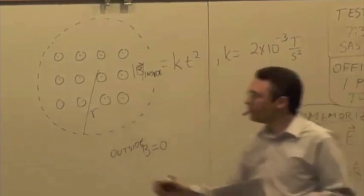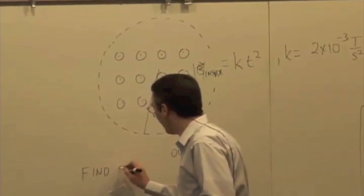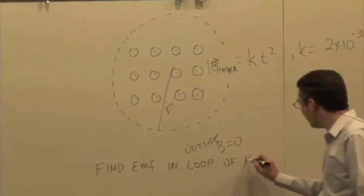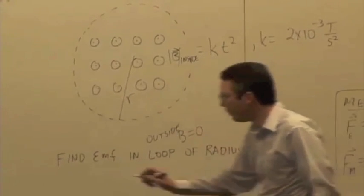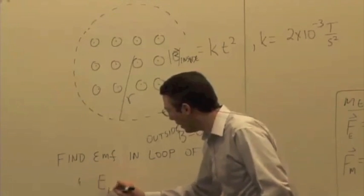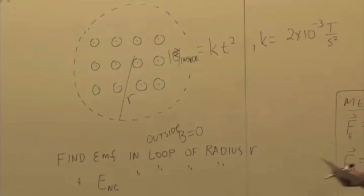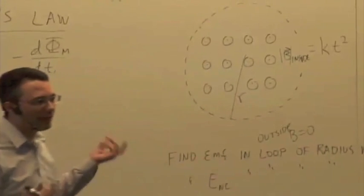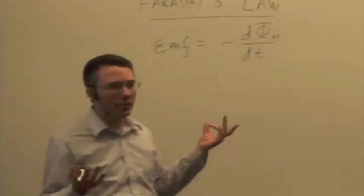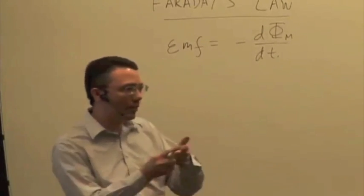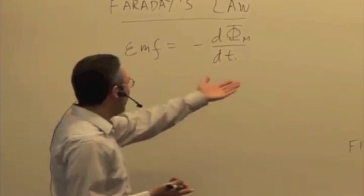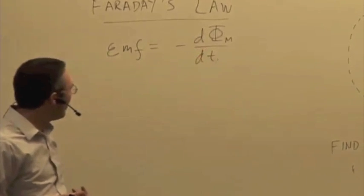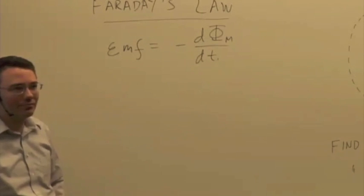We want to find the EMF in the loop of radius R, and then we could also find ENC. Now in this case, you want to be careful because in the previous cases we were given two different discrete values of magnetic field at particular times. In this case, I'm given the magnetic field as a function of time. EMF is equal to the negative of the derivative of the magnetic flux. What could I just do? Take the derivative, right?